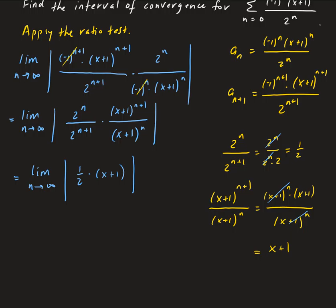So the absolute value of (x+1) can be taken outside the limit since it doesn't depend on n, and we can take out one half as well. The limit of one half as n goes to infinity is just the constant one half. So we get one half times the absolute value of (x+1).